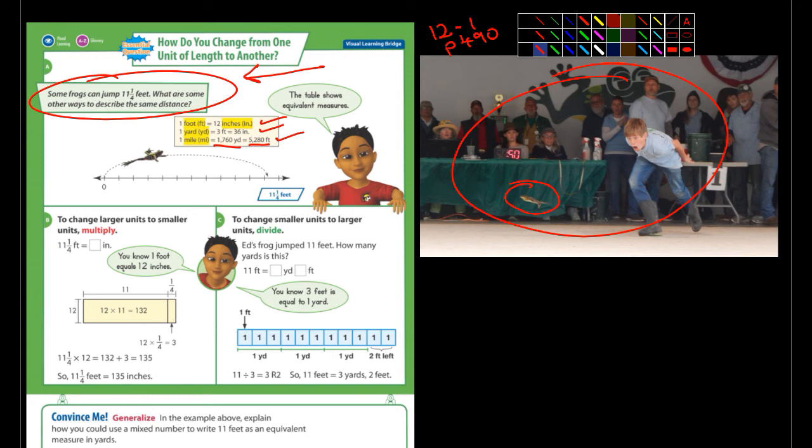So the example they give here is to change larger units into smaller units, you always multiply. And to change smaller units into larger units, you always divide. How would you convert 11 and one quarter feet into inches? You just simply multiply 11 and one quarter by 12 and you're going to get 135 inches. The example just to the right of that says you want to convert 11 feet into yards and feet. So 11 feet is how many yards? Well, there's three feet in a yard. I had to think about that for a moment. And so 11 feet, that would be three yards. And what's left over, two feet. And that's what they have right down there.